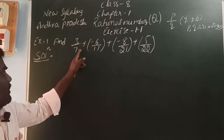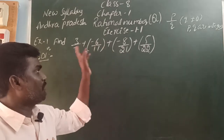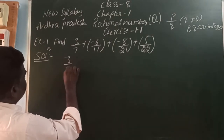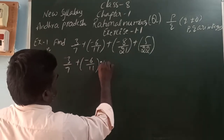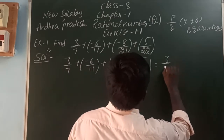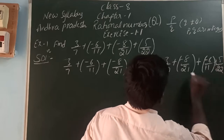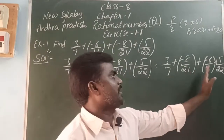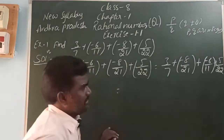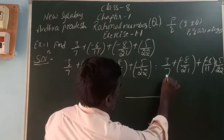Observe the denominators: 7, 11, 21, 22. We can observe that 7 and 21 are both multiples of 7, and 11 and 22 are both multiples of 11. So we can rearrange as: 3/7 + (-8/21) + (-6/11) + 5/22. These two groups — 7 and 21 are multiples of 7, and 11 and 22 are multiples of 11. The LCM of 7 and 21 is 21, and the LCM of 11 and 22 is 22.